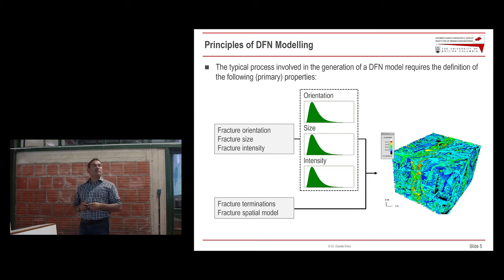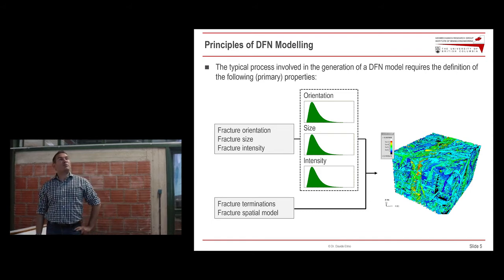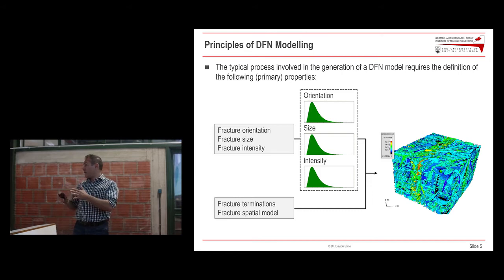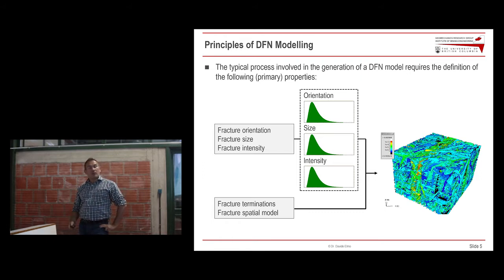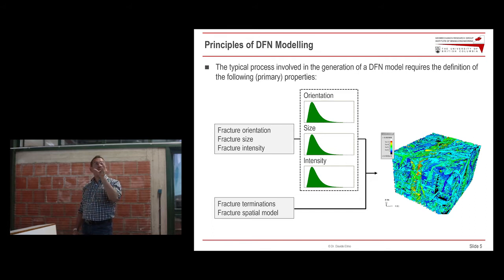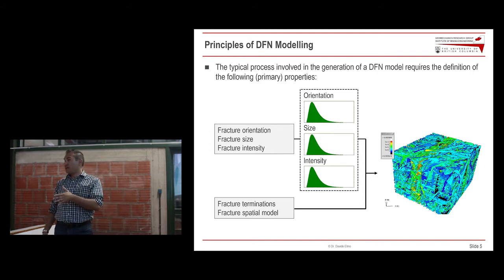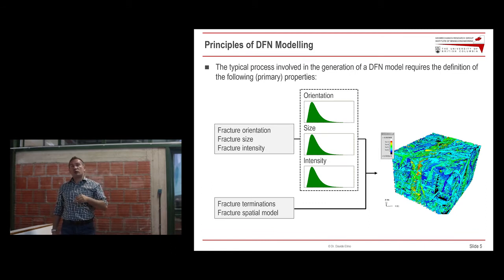In terms of properties, I'll limit myself to those used for geomechanical models. DFN models were initially developed for hydrogeological applications. For geomechanical application we use fracture orientation, fracture size based on the length of the fractures, and fracture intensity — how many fractures we use to populate the volume. Other properties like fracture terminations and spatial models relate the fractures to each other. These parameters are not included as deterministic values but are used based on statistical distributions, and we sample from those distributions when we run the Monte Carlo simulation to generate the model.